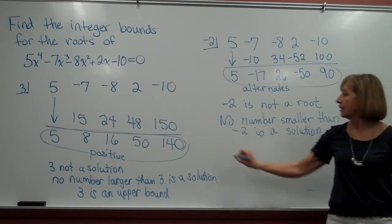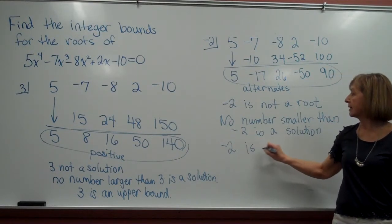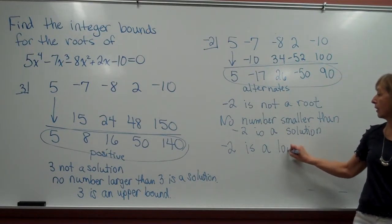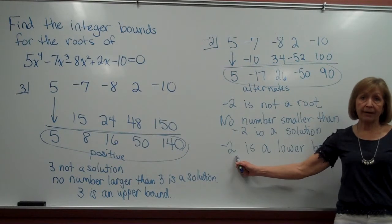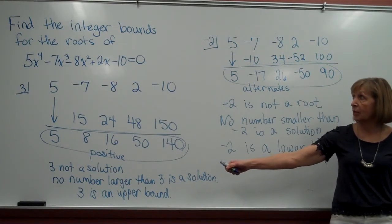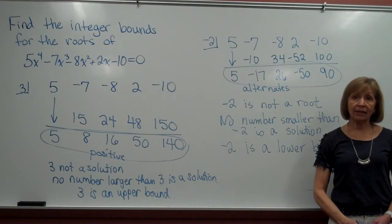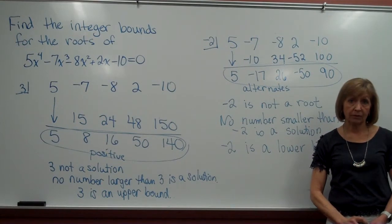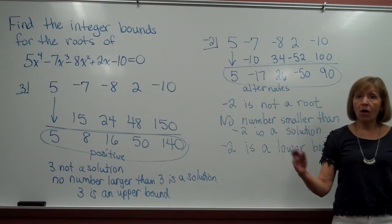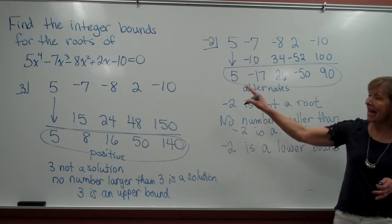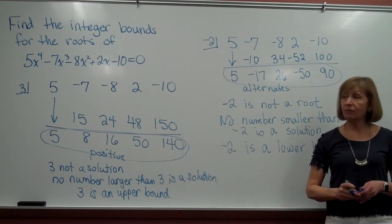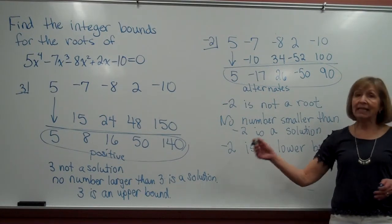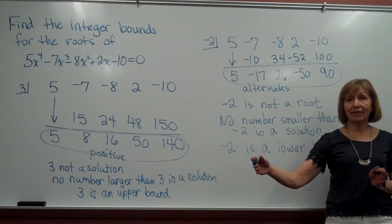And so negative 2 is a lower bound. So negative 2 is a lower bound and positive 3 is an upper bound. We have found our integer bounds on our roots. And that also means that all of the real numbers that satisfy this polynomial equation have to be numbers whose values are somewhere between negative 2 and 3.